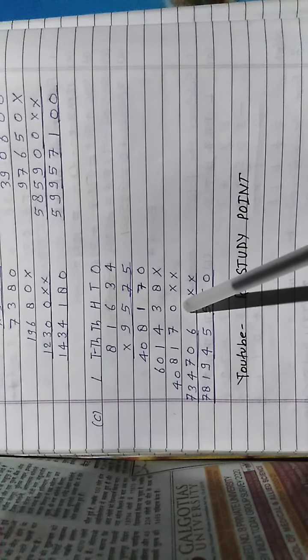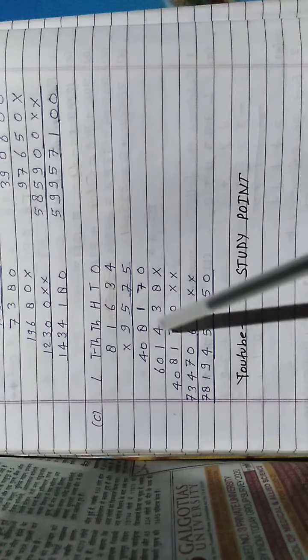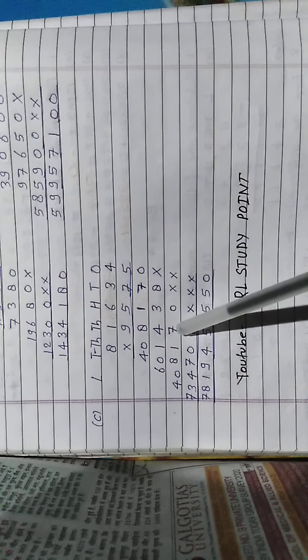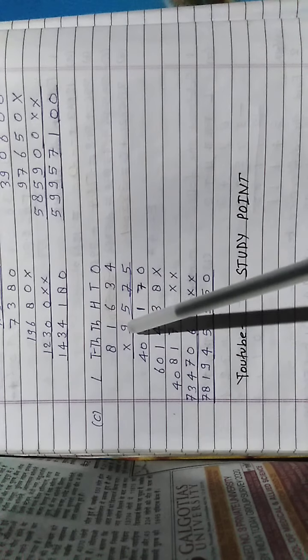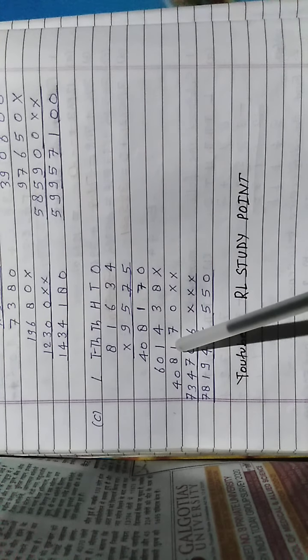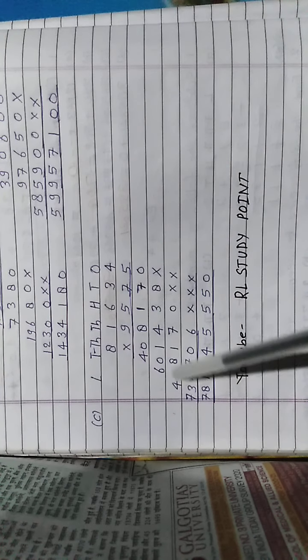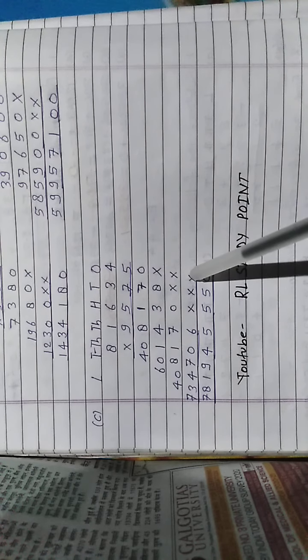5 times 4 is 20, 0 carry 2. 5 times 3 is 15 is 17, 7 carry 1. 5 times 6 is 30 and 1 is 31, 1 carry 3. 5 times 1 is 5 plus 3 is 8. 5 times 8 is 40 and here multiplication this.